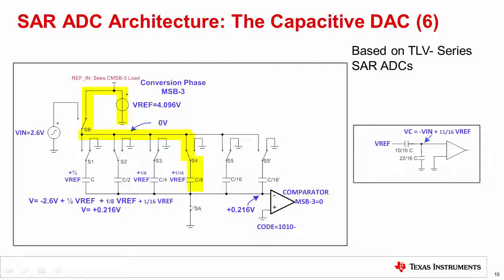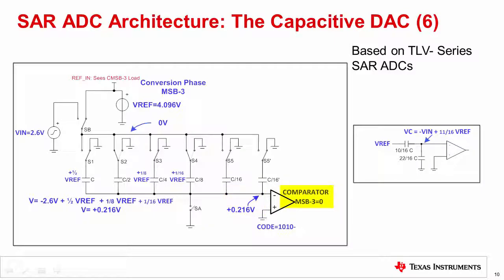In a similar fashion, during the fourth bit decision, C/8 connects to Vref using switch S4. Since the last bit decision was high, switch S3 is turned to ground again to discharge C/4. The simplified circuit on the right shows the comparator voltage becomes VC = -VIN + (11/16)·Vref. The resulting voltage at the inverting comparator input is positive, and the comparator output goes low, resulting in the fourth bit decision equal to 0.